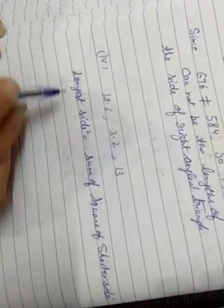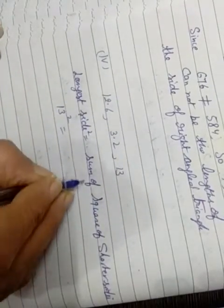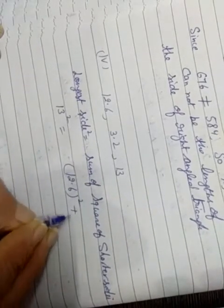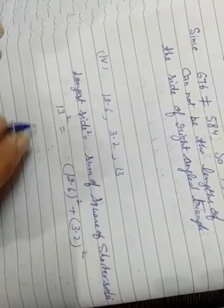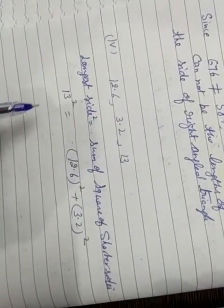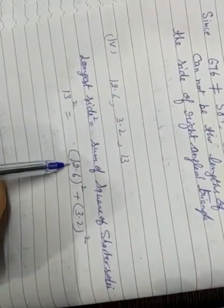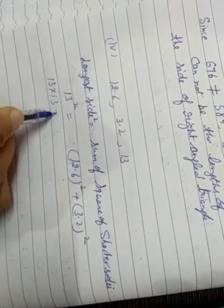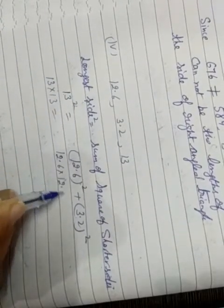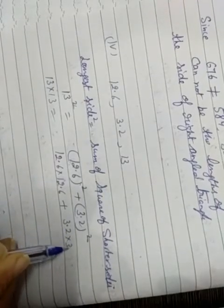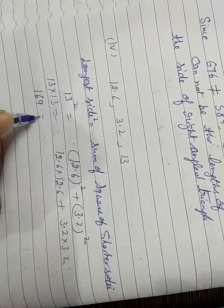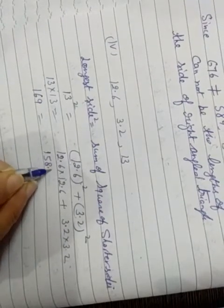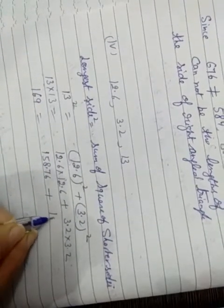Part 4: Longest side 13 square equals sum of shorter side square. 12.6 square plus 3.2 square. Now, 13 square equals 12.6 square plus 3.2 square. 13 multiply by 13, 12.6 multiply by 12.6, plus 3.2 multiply by 3.2. 13 multiply by 13 we get 169. 12.6 multiply by 12.6 we get 158.76. 3.2 into 3.2 is 10.24.